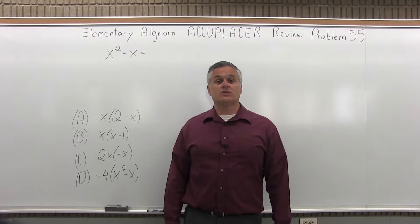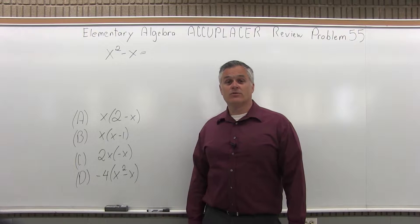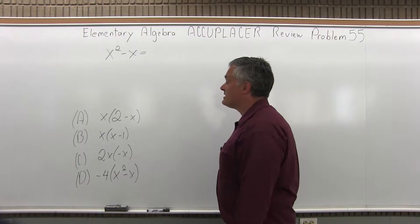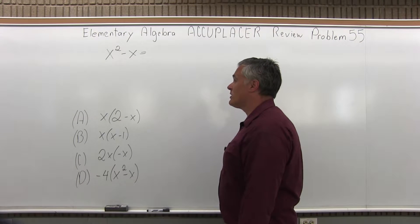This is the Elementary Algebra Accuplacer Review, Problem 55. So we have x squared minus x equals which one of the following four options?